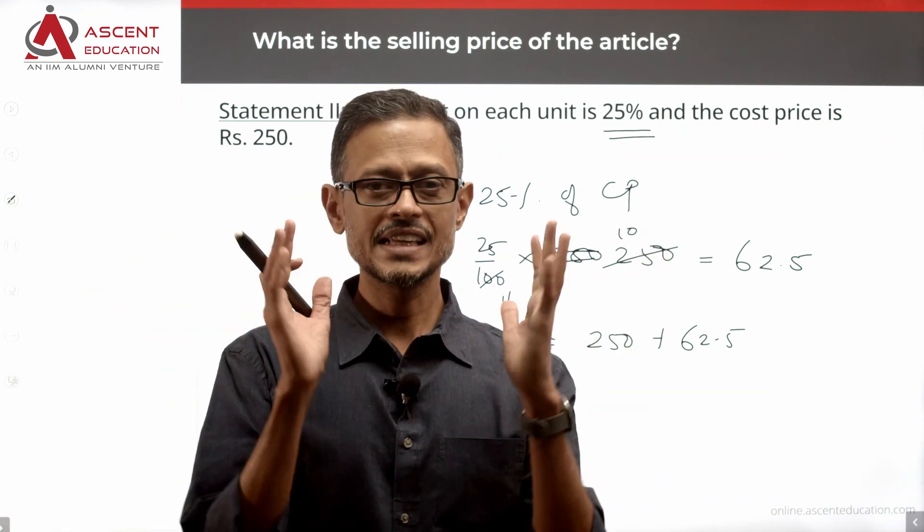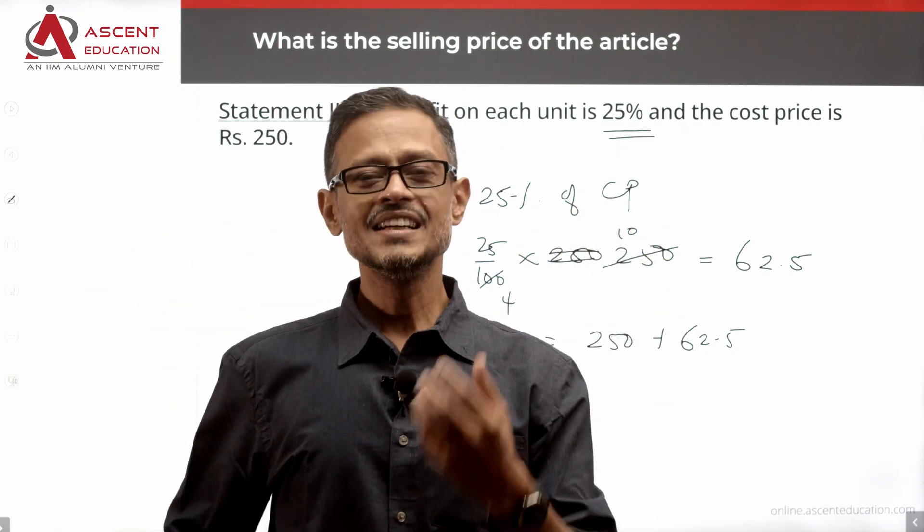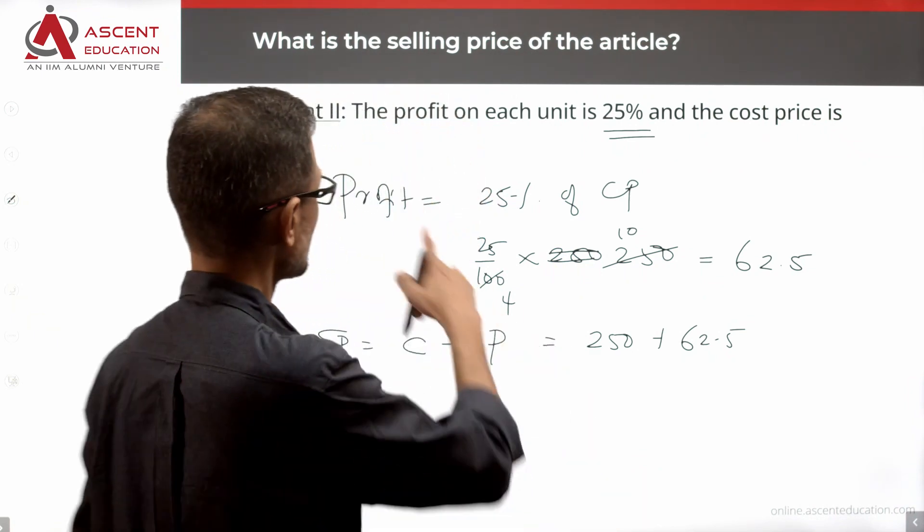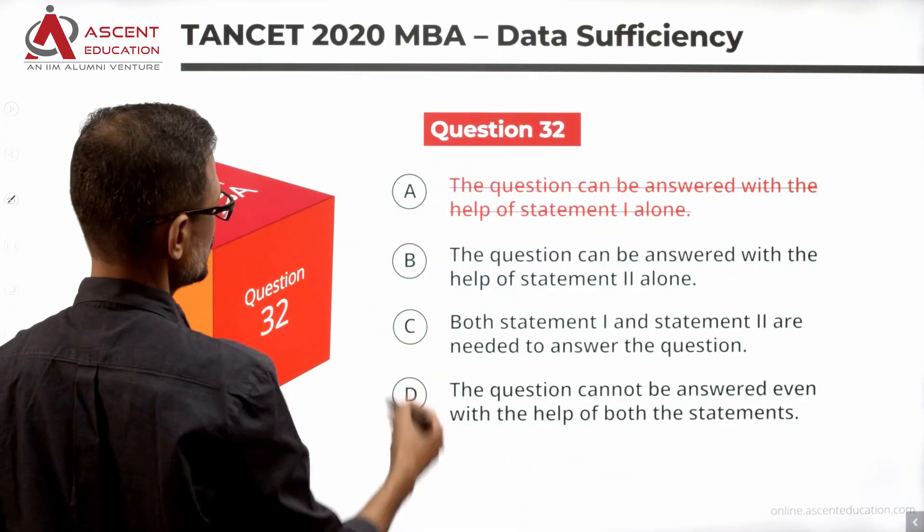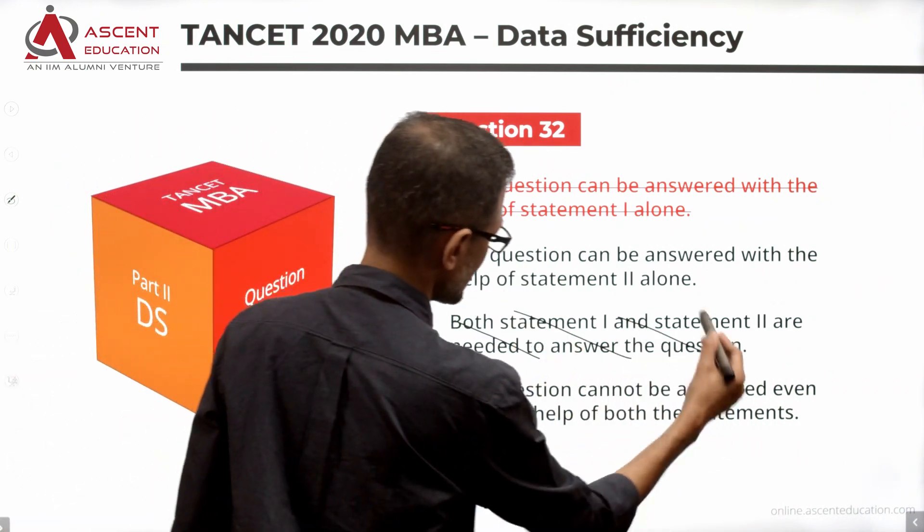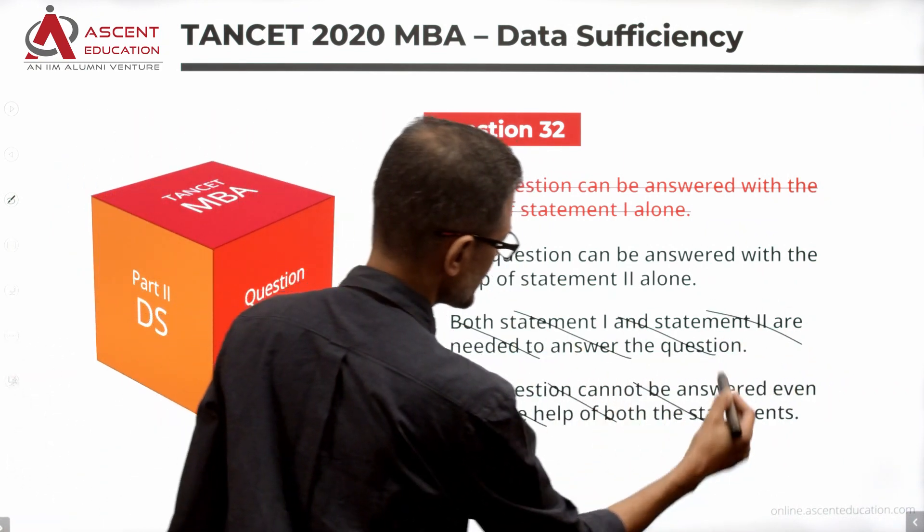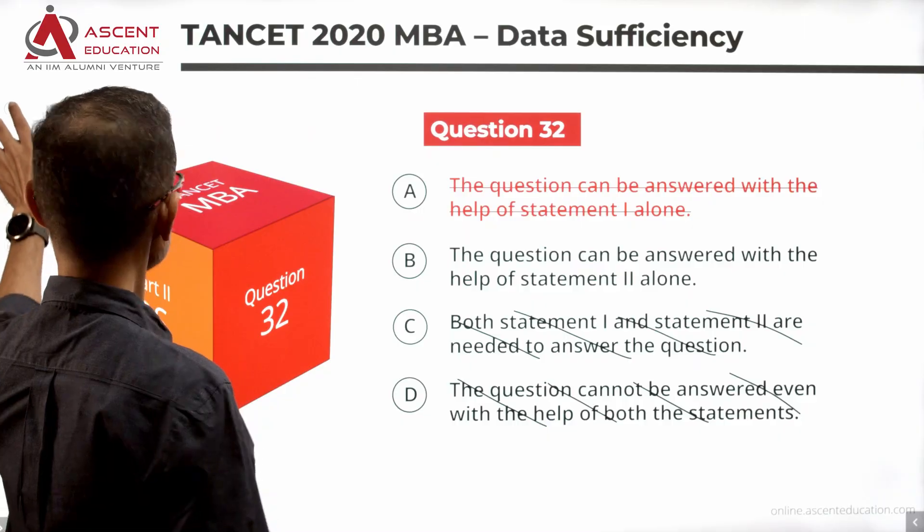So taking statement 2 alone, we have been able to find a unique value for the selling price. So statement 2 alone is sufficient. Choice B is the answer to this question.